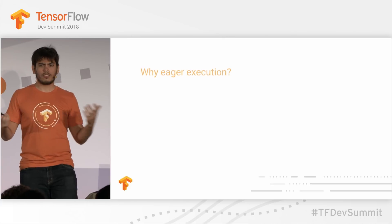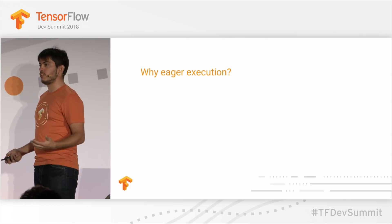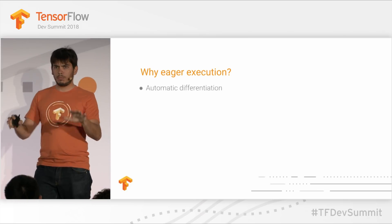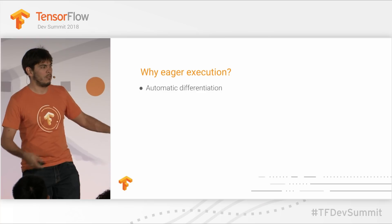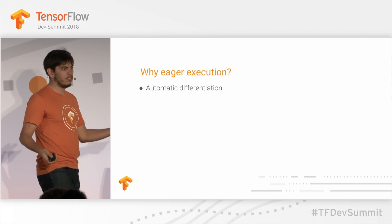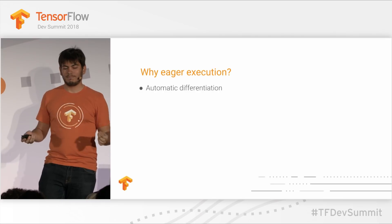So since graphs are so good, what made us think it's a good idea to move beyond them and let you do eager execution? A good place to start is that you don't actually have to give up automatic differentiation. You can differentiate dynamic code, like Python's Autograd does — you just build up a trace as you go and then walk back the trace to compute gradients.